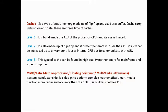Cache: it is a type of static memory made up of flip-flops and used as a buffer. Cache carries instructions and data. There are three types of cache: Level 1, Level 2, and Level 3.